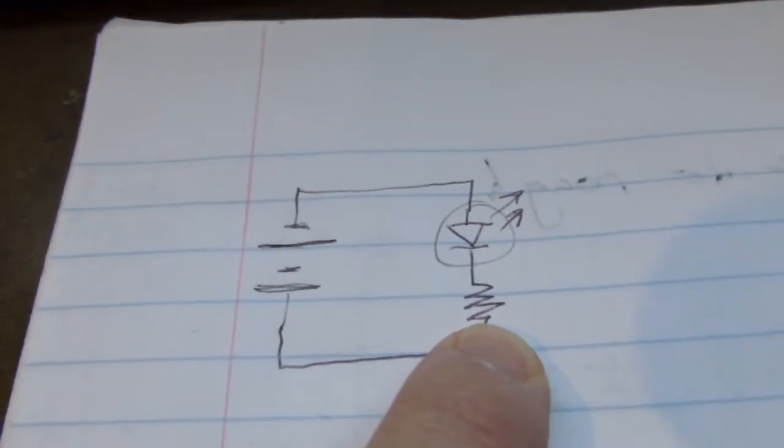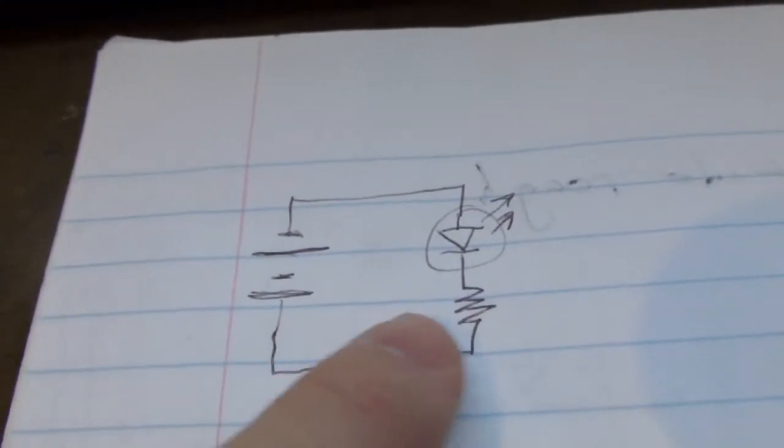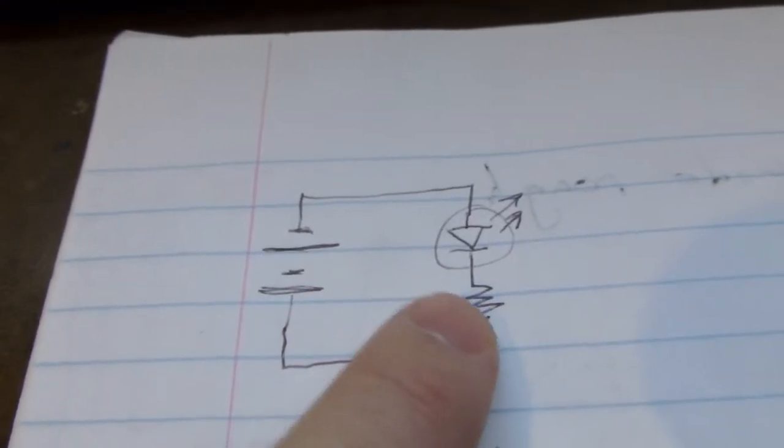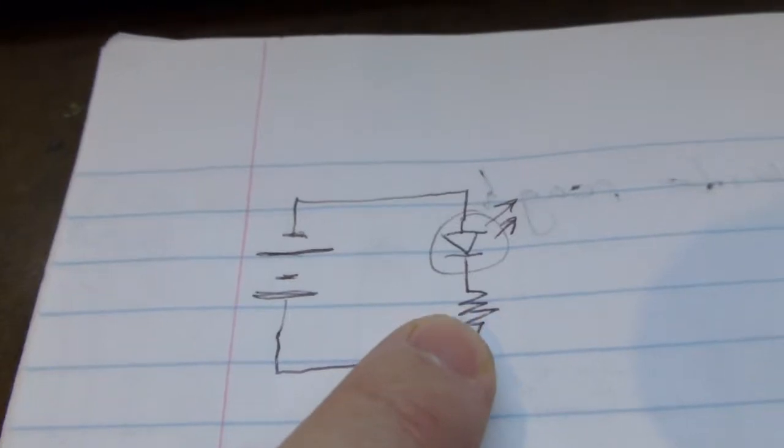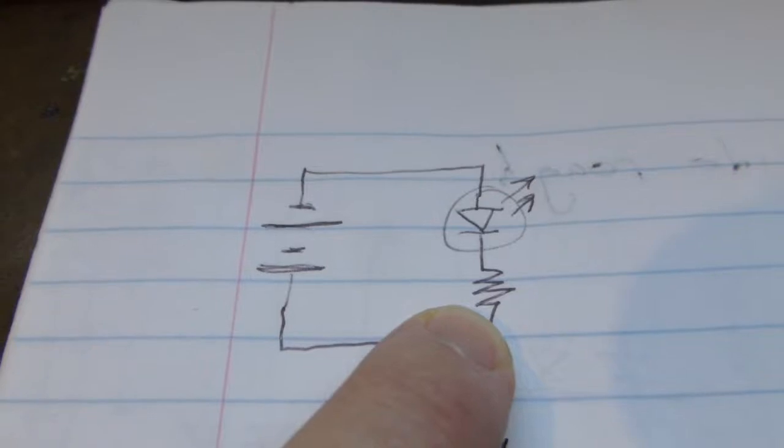The resistor, this is a resistor, the squiggly line sort of graphically represents the fact that the electricity has a harder time going through there which is why it's called a resistor. It resists the flow of electricity.